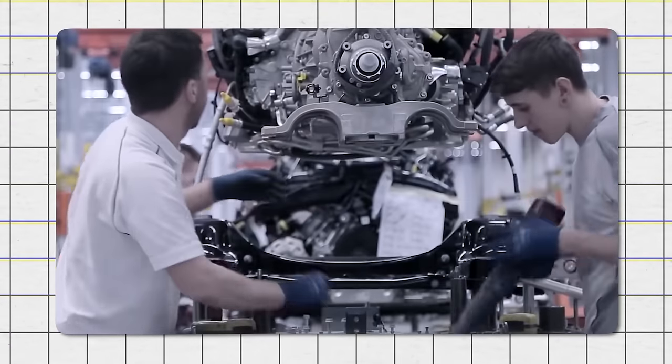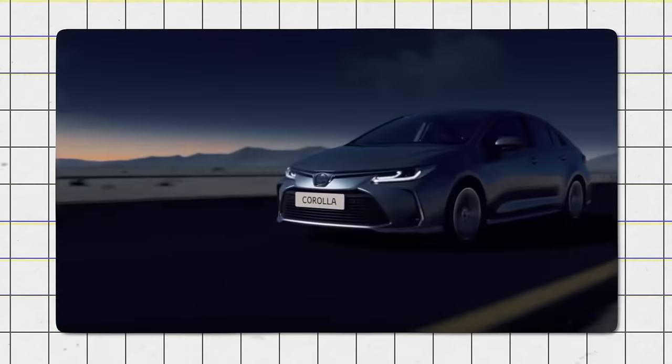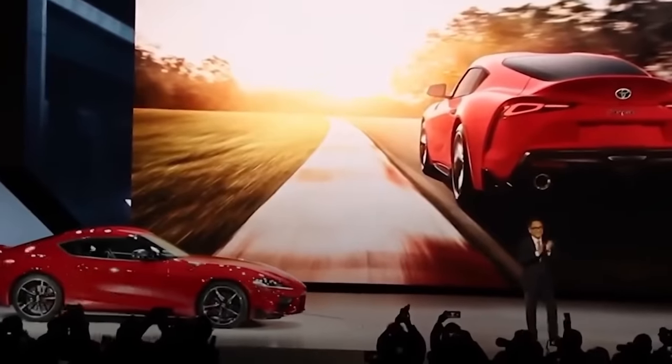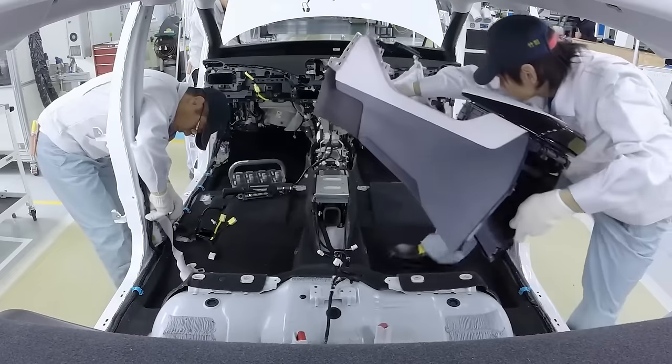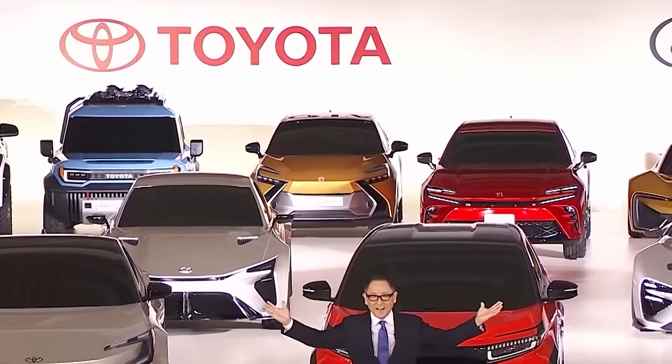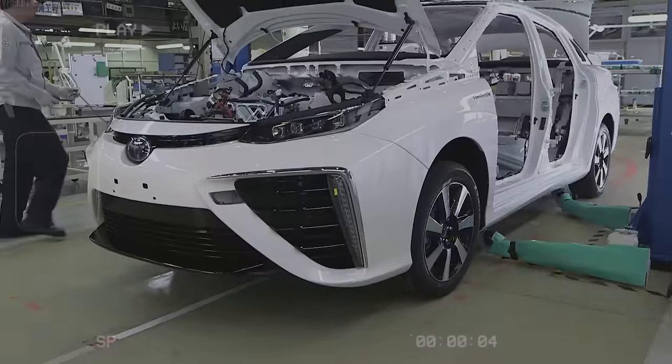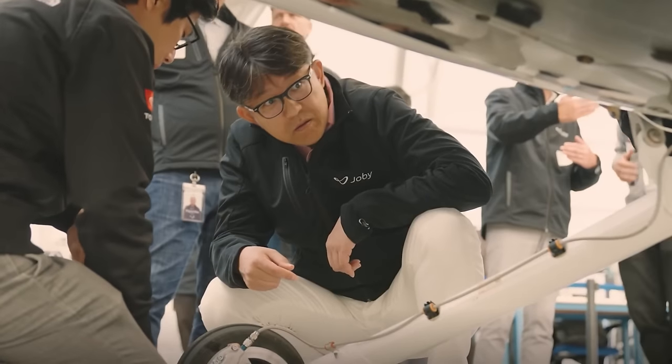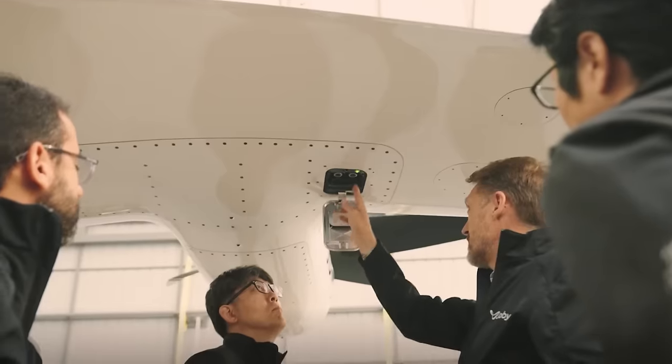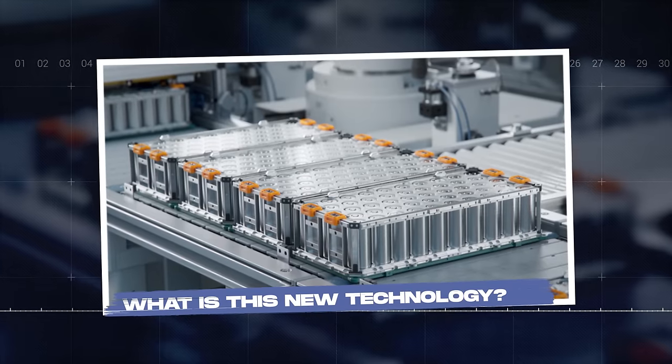This led them to research and develop different technologies that would help increase the range and reliability of their future EV models. And, while that might sound convoluted and hard to do for a company that has been making EVs for less than two years, Toyota is no ordinary company. And, after two years of hard work and devotion towards developing cutting-edge EVs, Koji Sato recently announced that Toyota has started working on an all-new technology that has been unheard of in the world of EVs up until now. So, with that in mind, let's answer the question. What is this new technology?